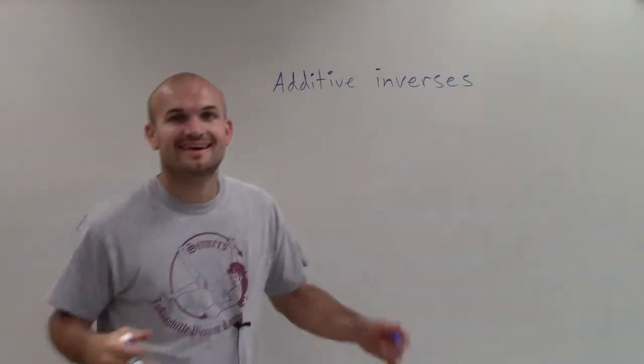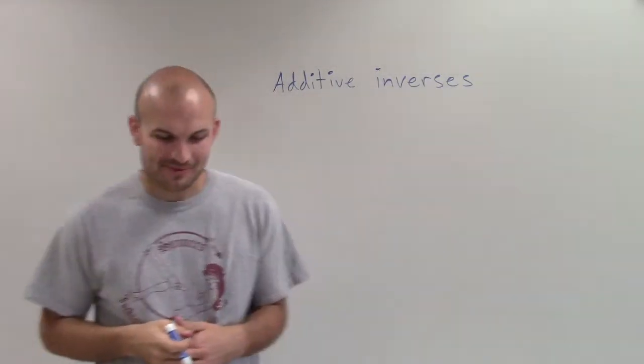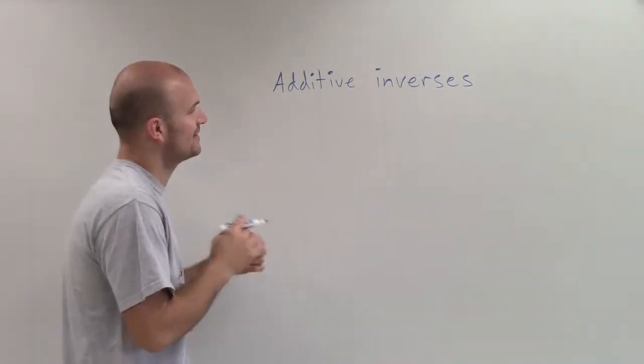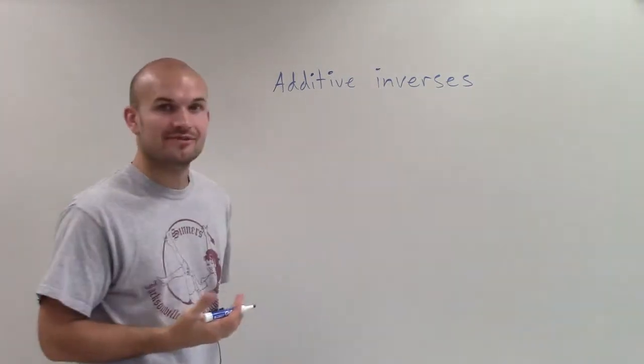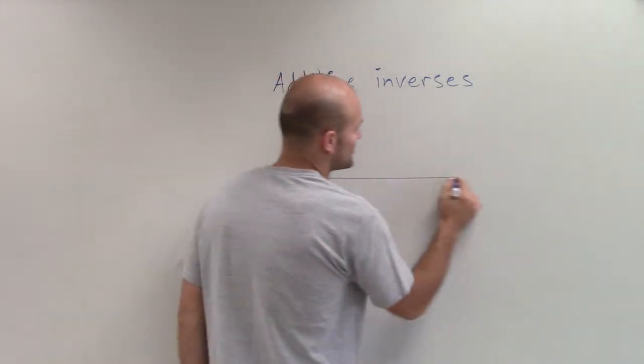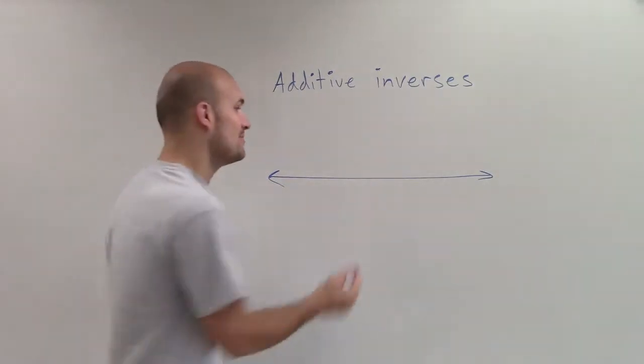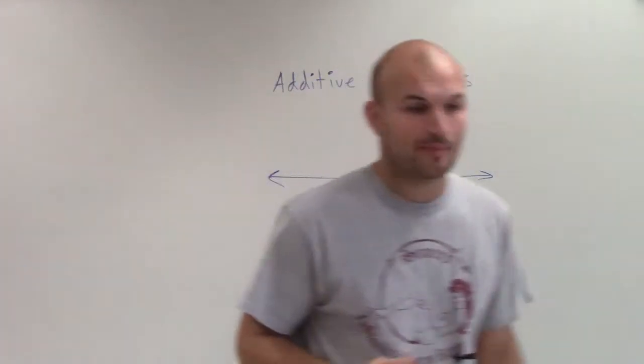Dot, dot. So additive inverse is what I want to talk to you about real quick. When talking about additive inverses, we're going to be dealing with two numbers and the special relationship between those two numbers. I'm going to use a number line to represent this.